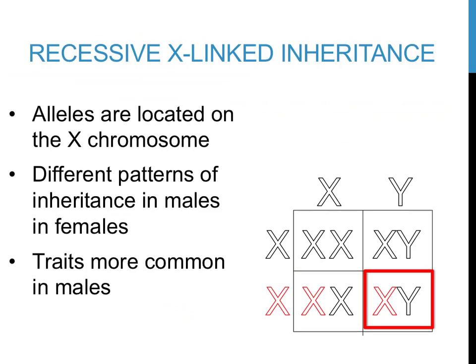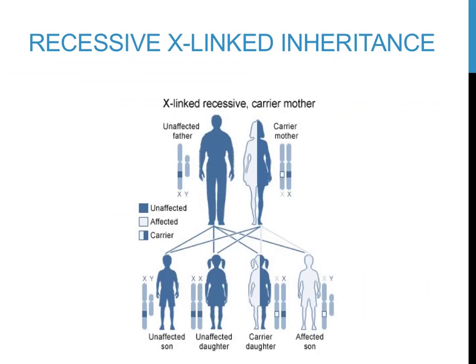The individual on the bottom right of this Punnett square would be a male, because he possesses an X and a Y chromosome. This male only has one copy of this recessive X allele. Since males only have one X chromosome, and different genes are located on the X and Y chromosomes, nothing would mask this recessive allele, so this male would actually have the recessive trait. Males are therefore much more likely to have X-linked recessive traits than females. Examples of X-linked traits you might be familiar with include red-green colorblindness and male pattern baldness.